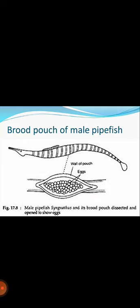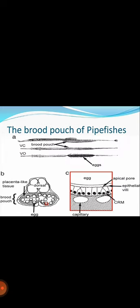In this slide you may see the brood pouch of a male pipefish — shown dissected and opened to reveal the eggs. Males of the brood pouch pipefish care for the offspring by brooding embryos in a brood pouch. Brooding males can absorb nutrients that emanate from embryos, and there is often a reduction in offspring number over the brooding period. This slide also shows the brood pouch with placental egg tissue on the dorsal side, and the brood pouch on the ventral side containing various eggs, with capillaries, epithelial villi, and the apical pole visible in the diagram.